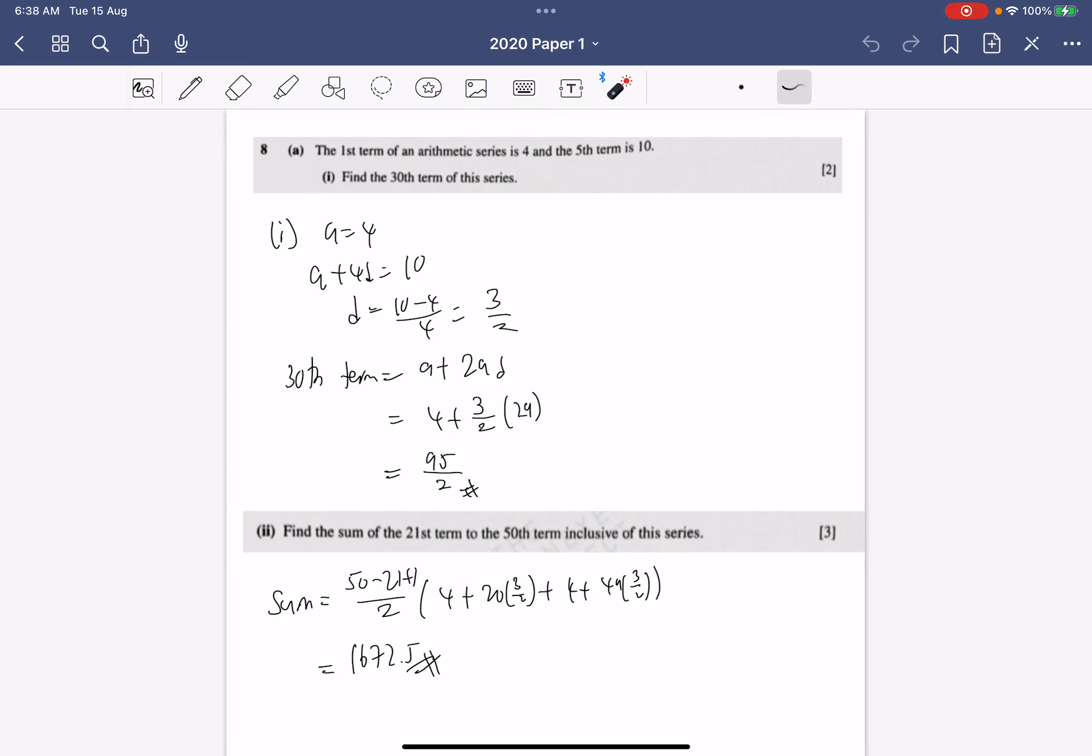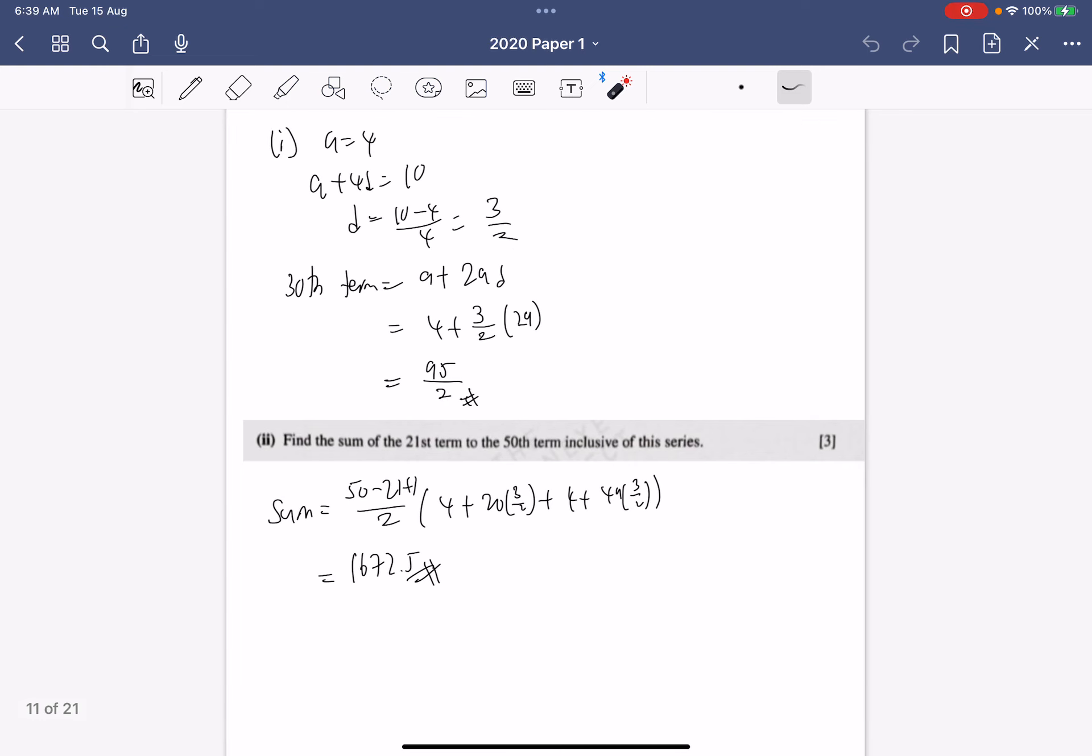Now for question eight, it says that the first term of an arithmetic series is 4, so a is 4, and the fifth term is 10, so a plus 4d is 10. This means d is 3 over 2. And the 30th term will just be a plus 29d which equals to 95 over 2.